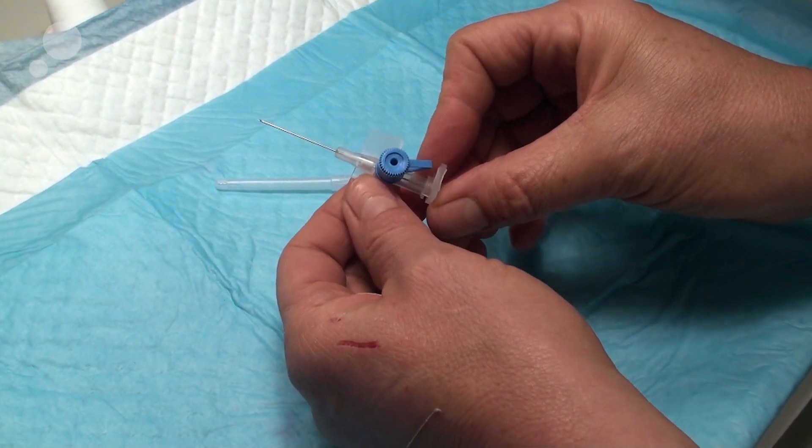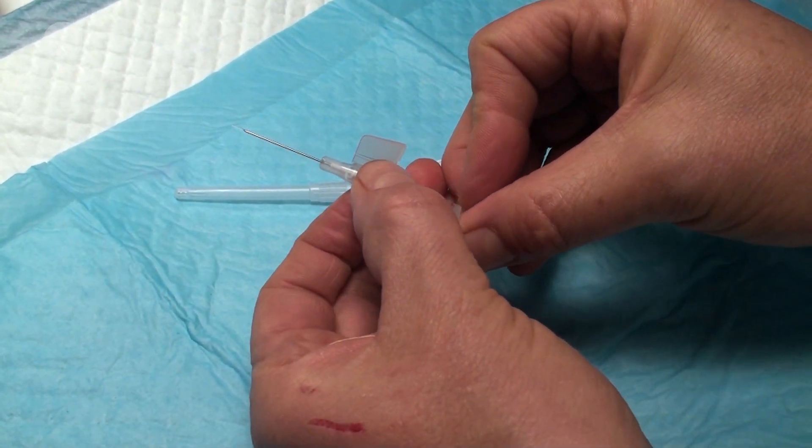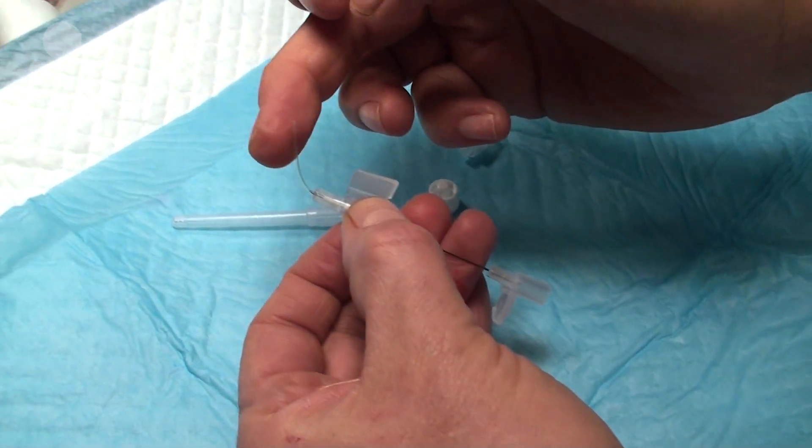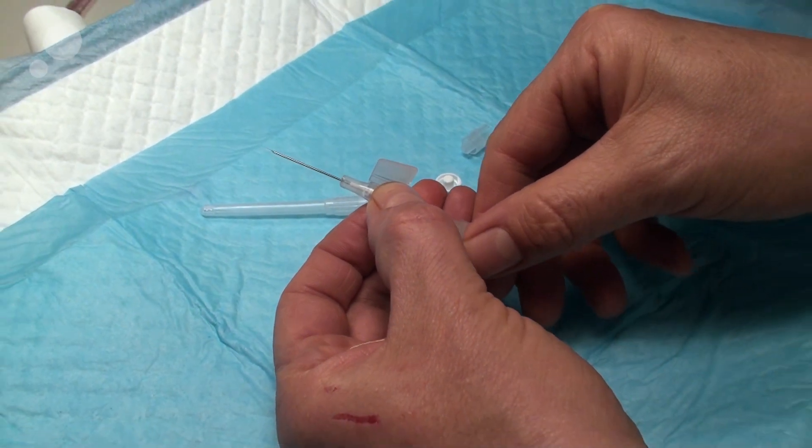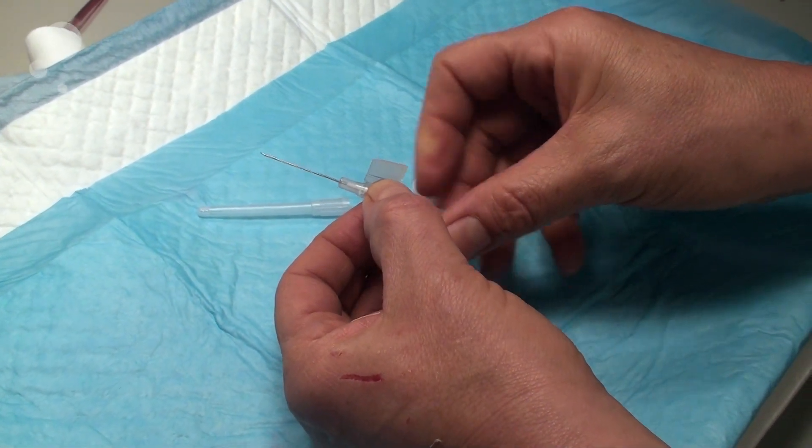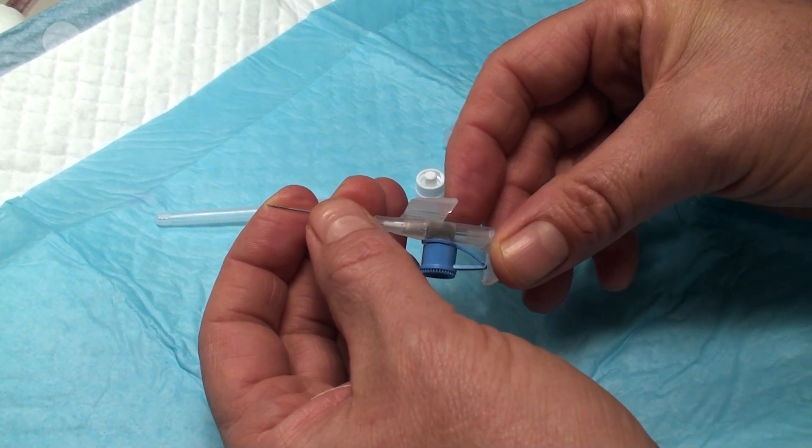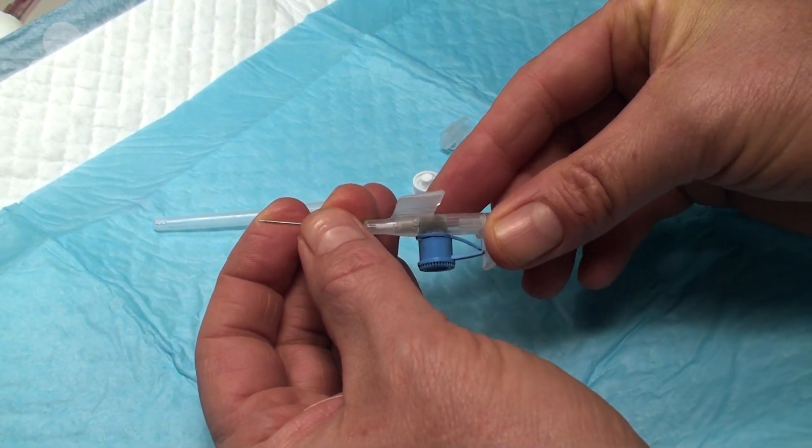When you look at the catheter, you will realize that there is the catheter itself here, and inside the catheter you have the needle. It's difficult to see, but the needle is actually two millimeters longer than the catheter.